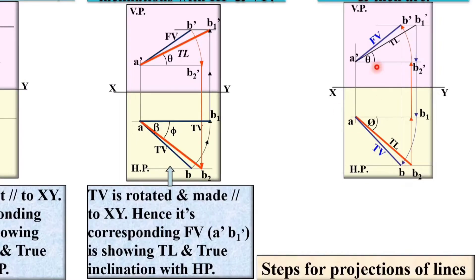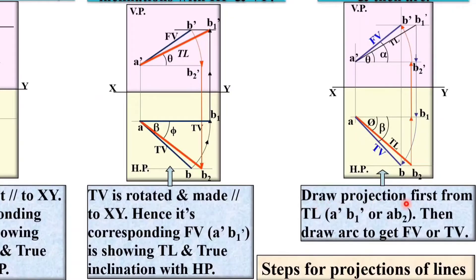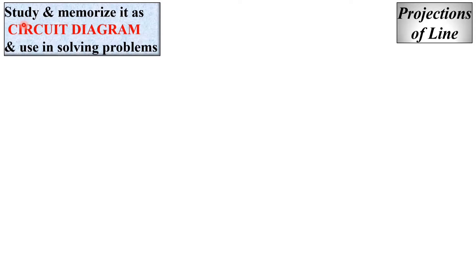So this gives the top view and the front view. The angle made by the top view with the horizontal line is always represented by alpha. Alpha and beta are the apparent angles, while theta and phi are the true inclinations. The process is: draw first the projection then the arc to get the front view and top view.